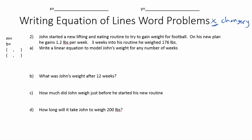The two things that are changing are his weight and the weeks. We have to ask: are the weeks changing his weight, or is his weight changing the weeks? The weeks are changing his weight, so weeks is x and weight is y. On his new plan, he gains 1.2 pounds per week — pounds per week with both variables changing makes this our slope, so m equals 1.2.